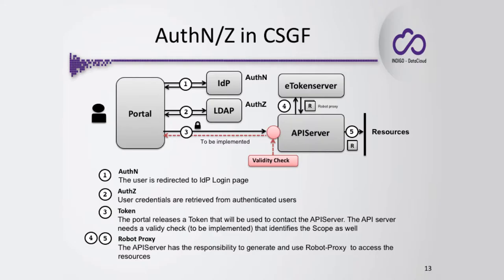Now let's look at how final users can interact with the REST APIs. Let's start from how the Catania Sense Gateway framework was managing authentication and authorization, and then we will see the differences with the Future Gateway. On the left we have the user contacting and connecting to the portal. The portal provides the identity provider authentication interface, so typically you are prompted to type your username and password, and the identity provider authenticates the user.